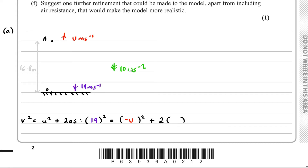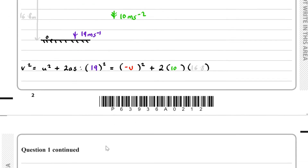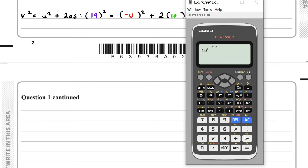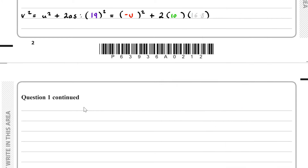Here we have two lots of A — A is equal to 10 metres per second squared — and S is 16.8 metres. So we can solve for U. We have 19 squared take away 2 times 10 times 16.8, and you'd find that to be 25. So U squared equals 25. And bear in mind, minus U all squared is the same as U squared. Therefore U equals the square root of 25, which is simply 5.